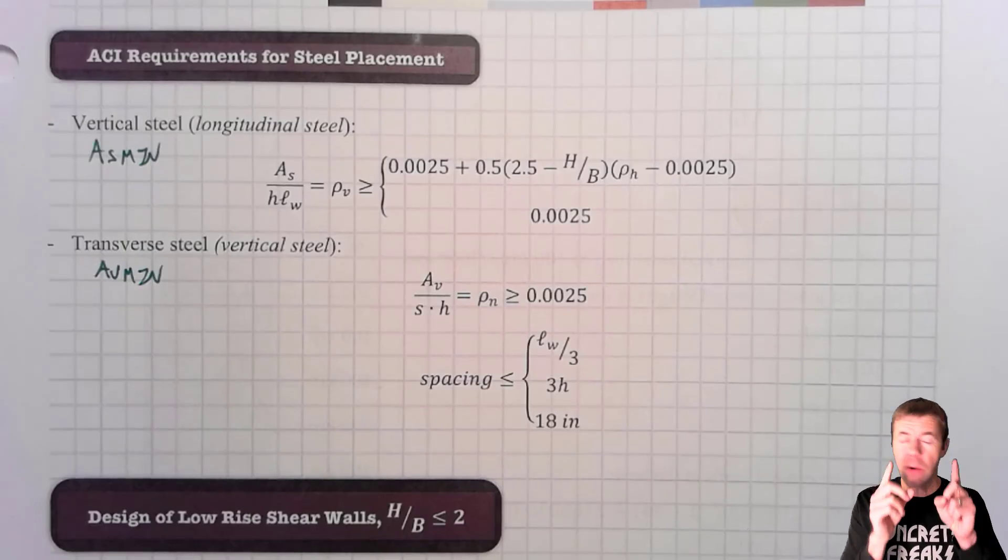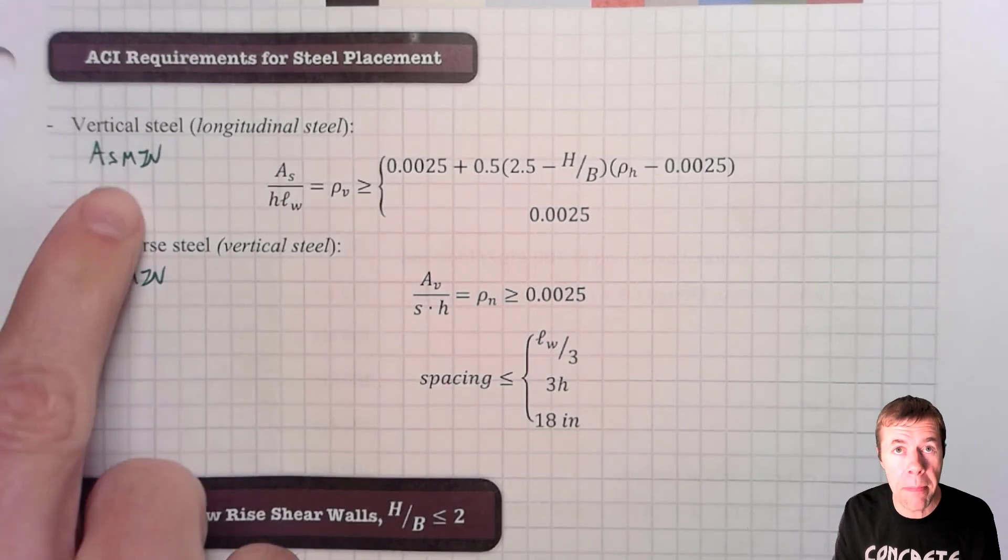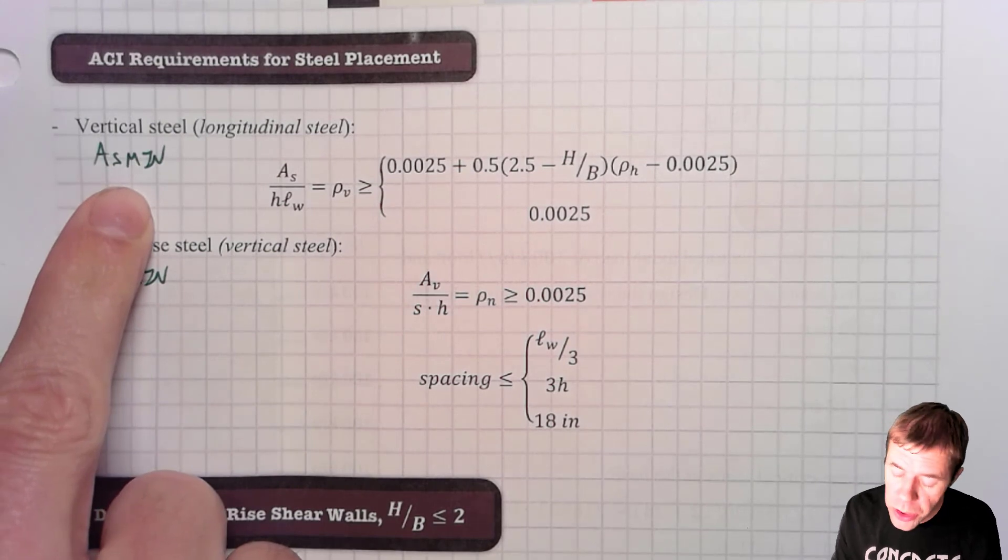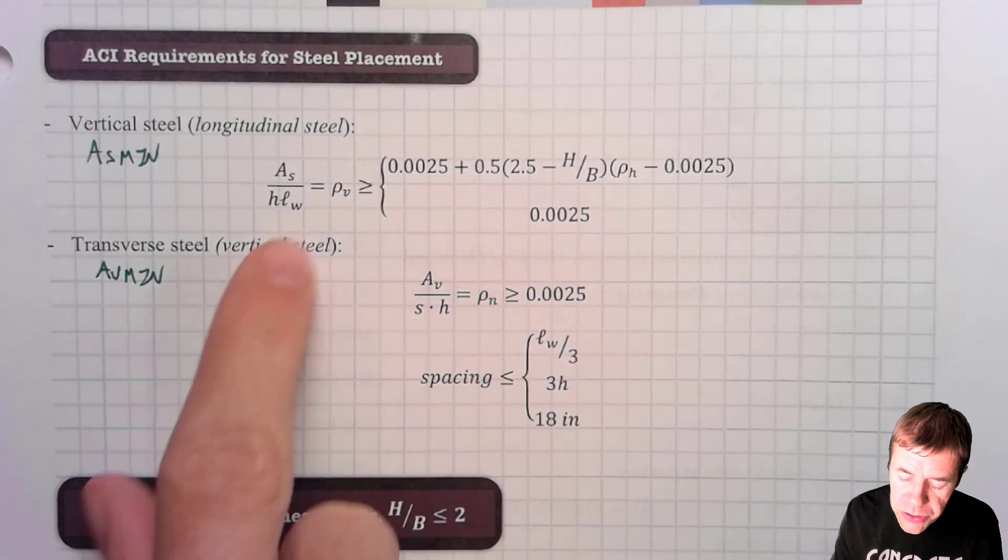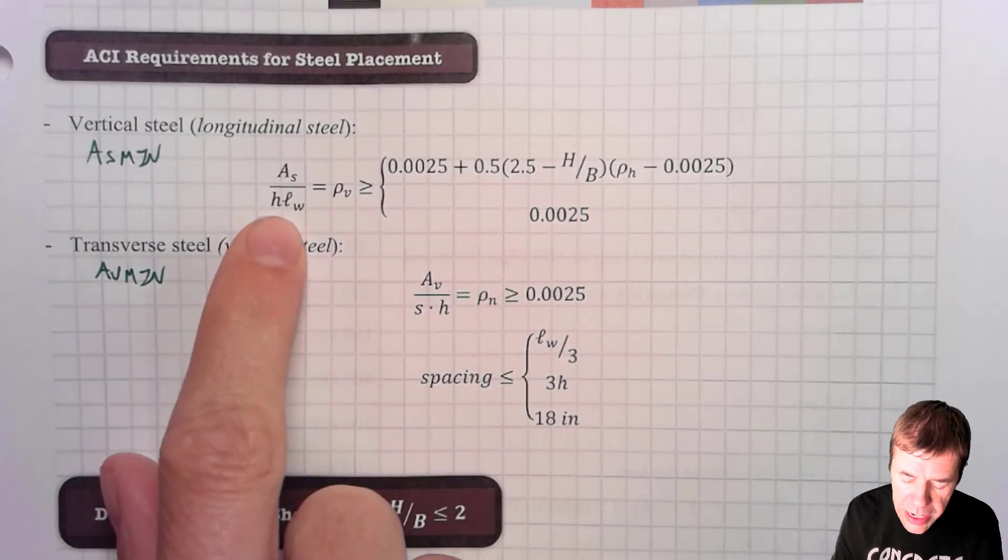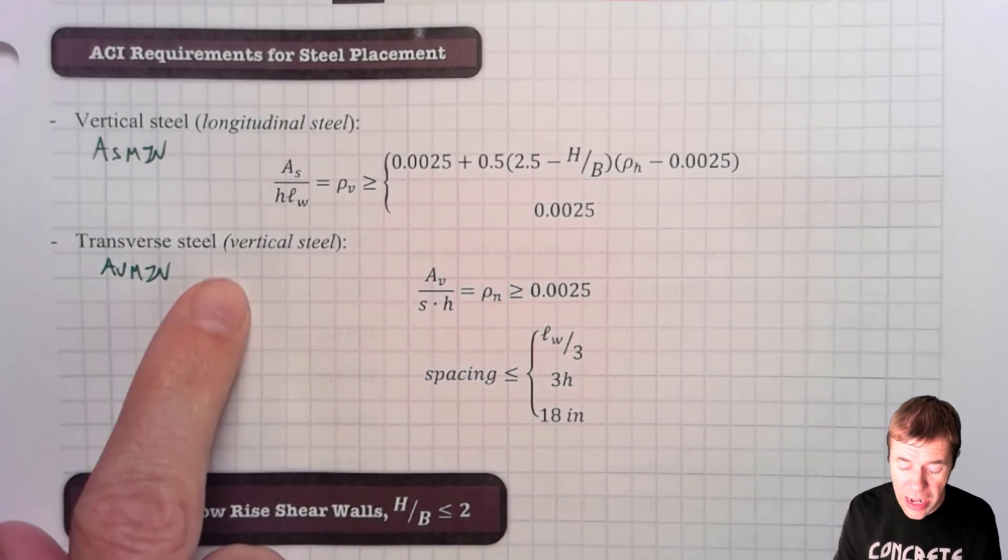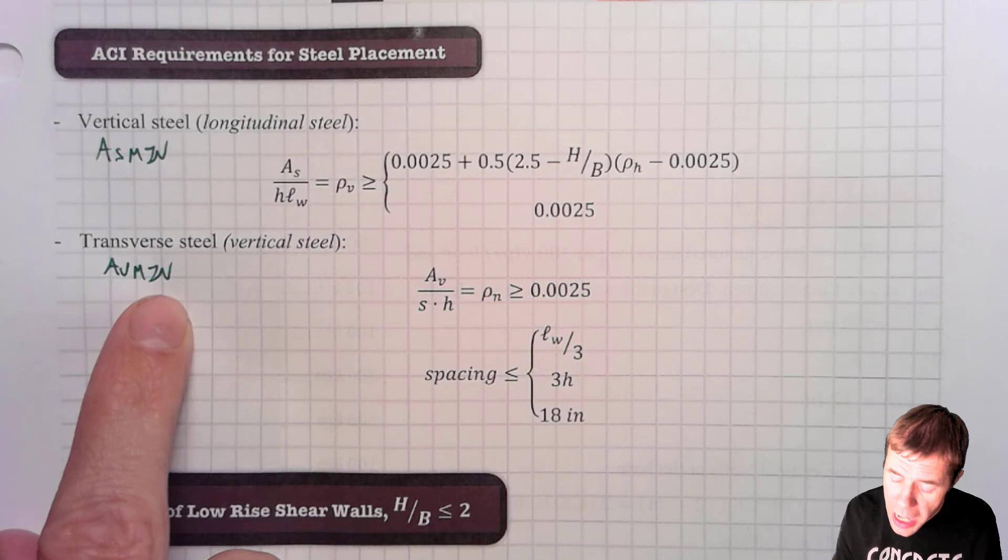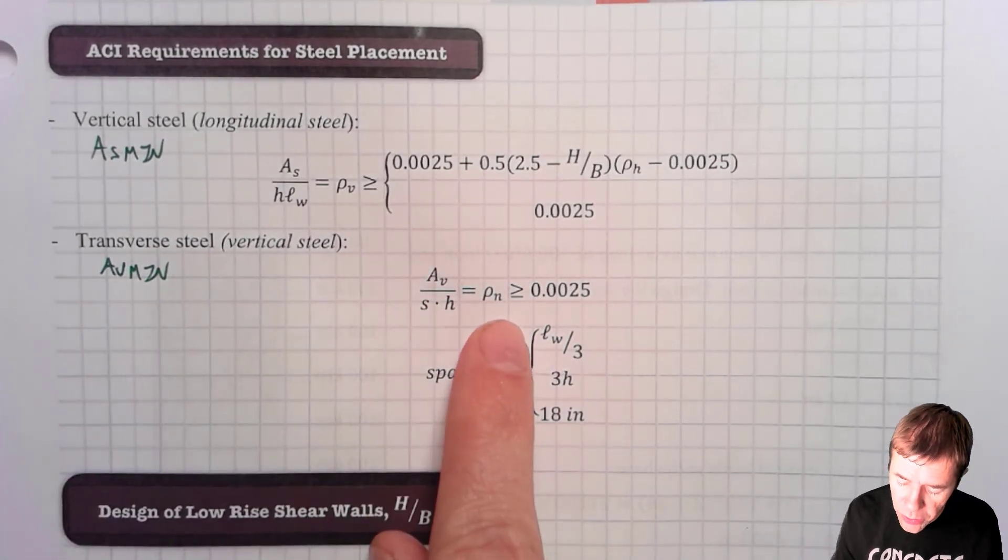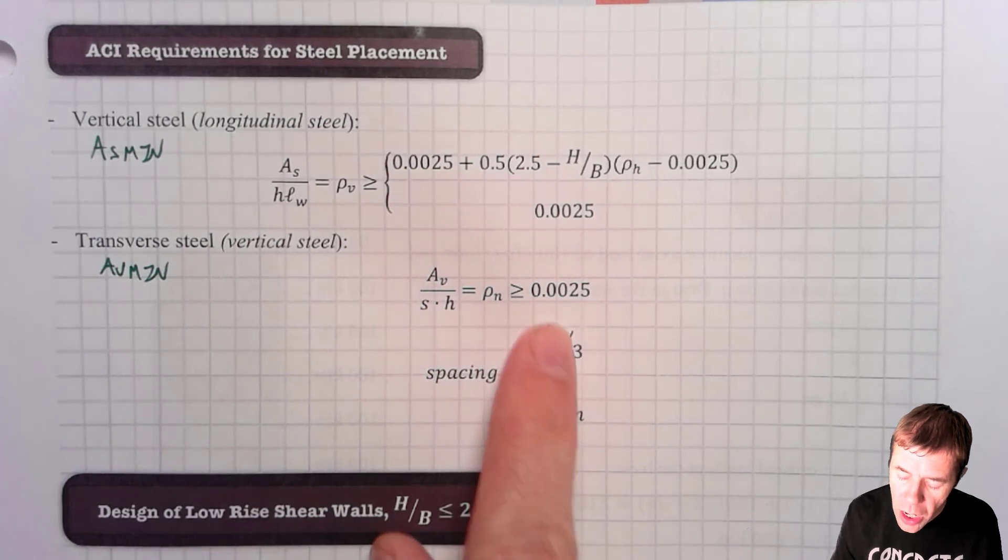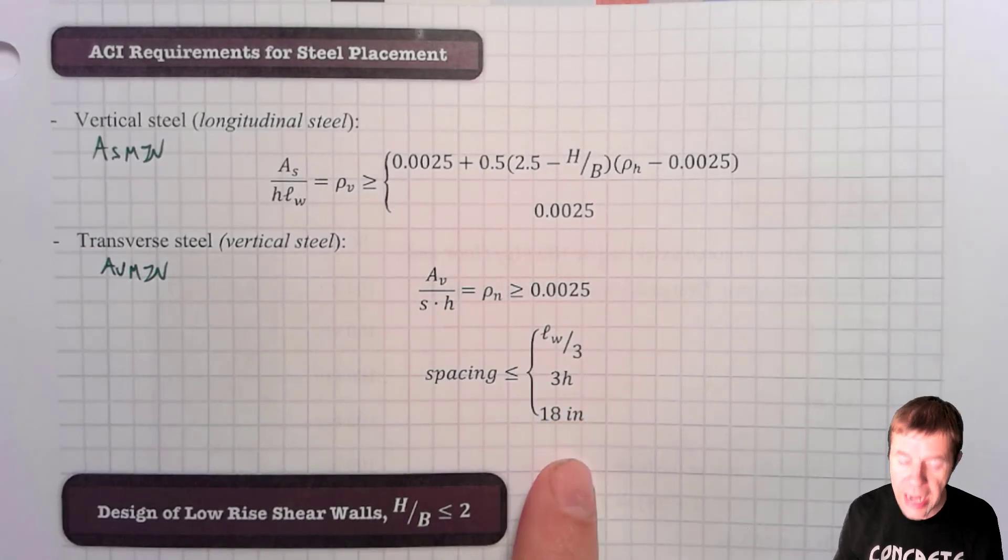Now, there's only one more thing. Well, two more things you have to make sure that you get right. There is an AS minimum that you need for your longitudinal steel. And you will plug into one of these to see which one actually controls. And then there's also your AV minimum or the amount of transverse steel minimum. And you will plug into this AV over S times H, which is greater than 0.0025. Or it could be one of these spacings, L sub W over 3, 3H, or 18 inches.